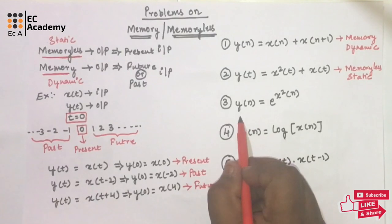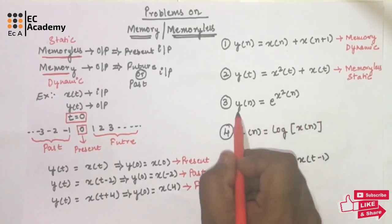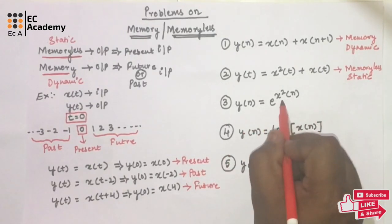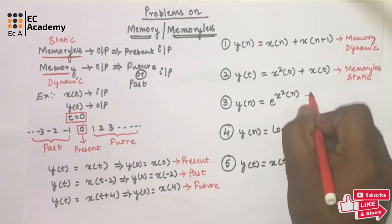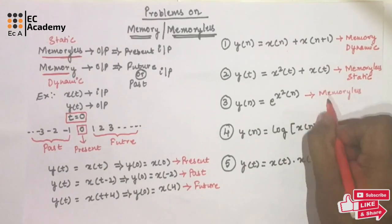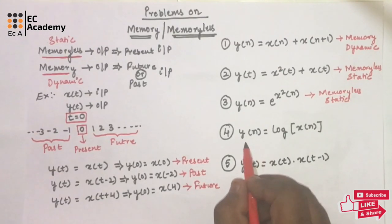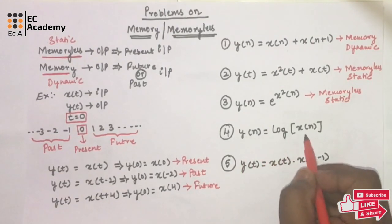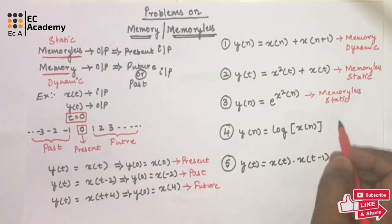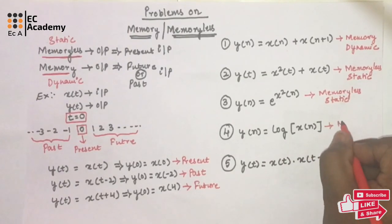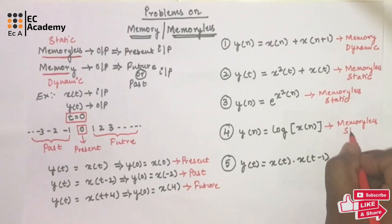Consider the third problem: y[n]=e^(x²[n]). The output depends upon only the present value of the input, so the system is a memoryless or static system. For the fourth problem, y[n]=log(x[n]), the output again depends only on the present value, so this system is also a memoryless or static system.